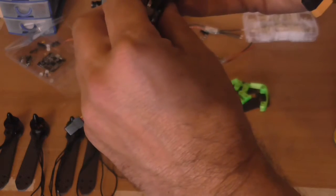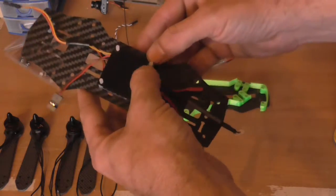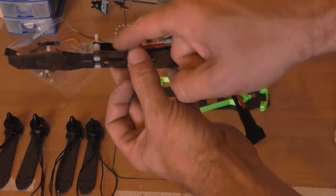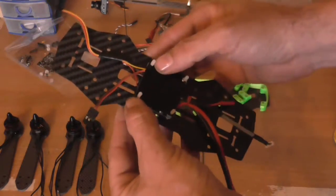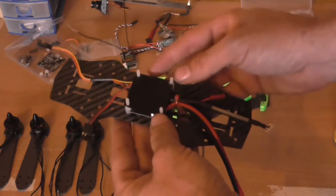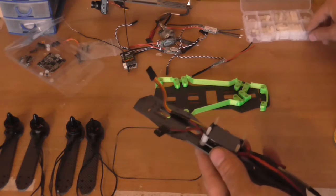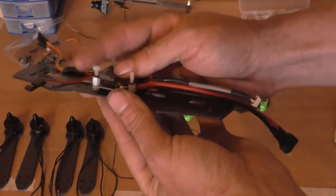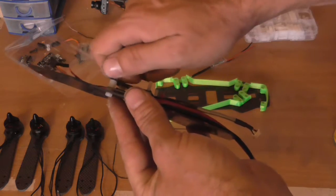I normally put this power distribution board down here, but because I'm putting the ESCs there, and what I'm doing this time is stacking the ESC board onto it - the ESC - the wires are nice and tidy.